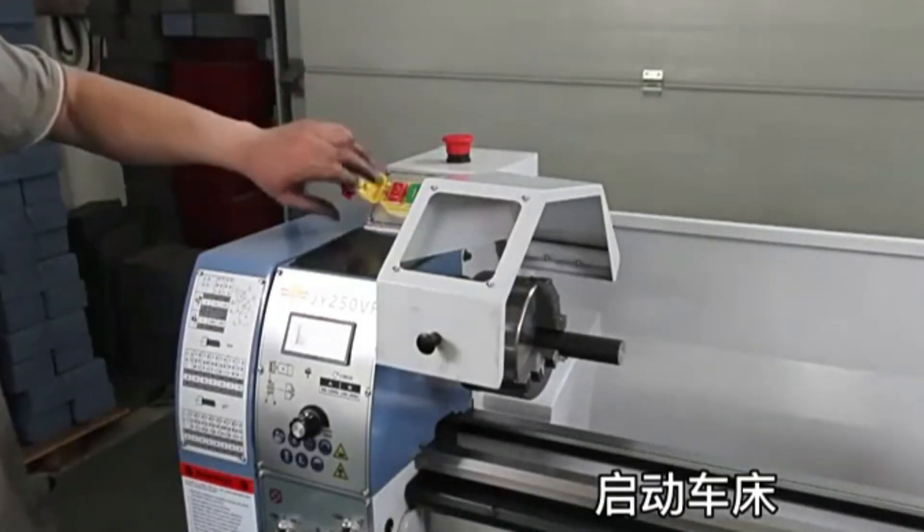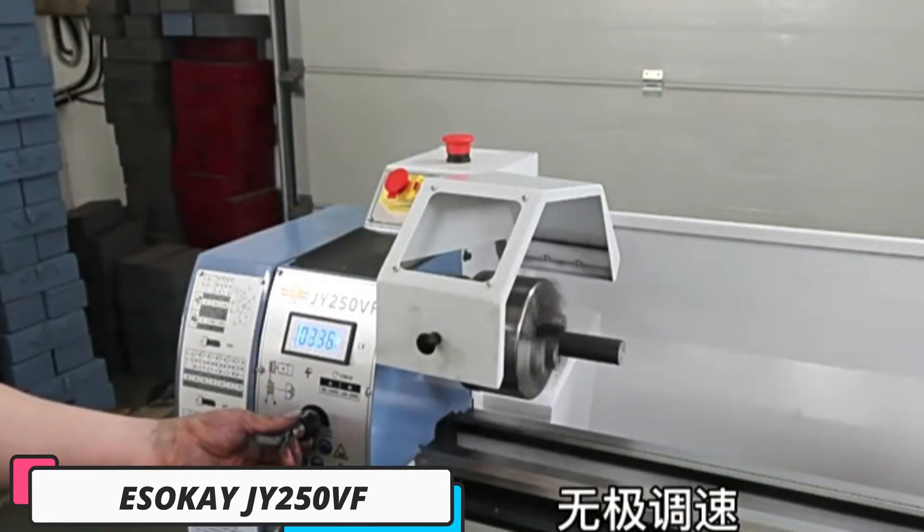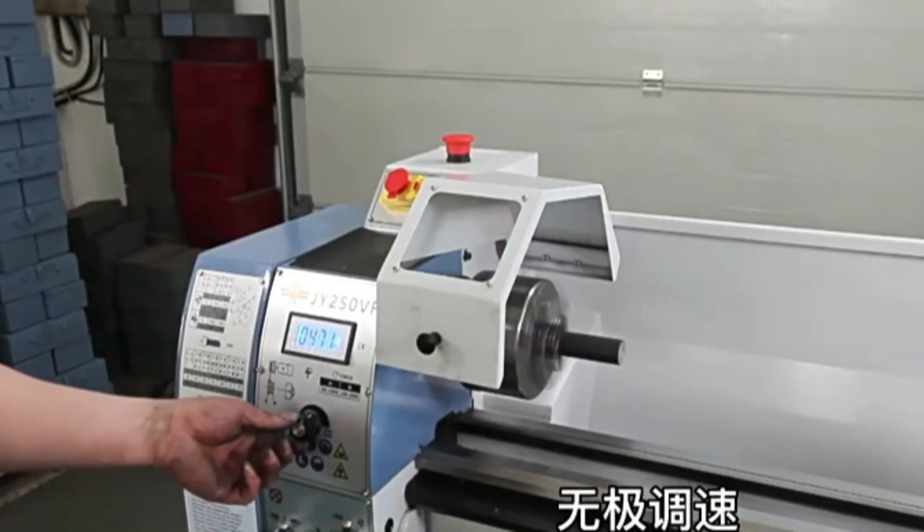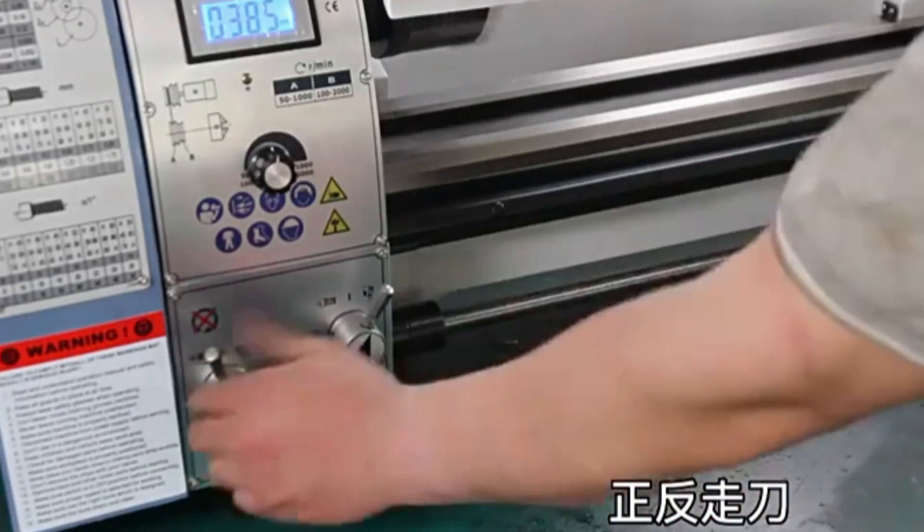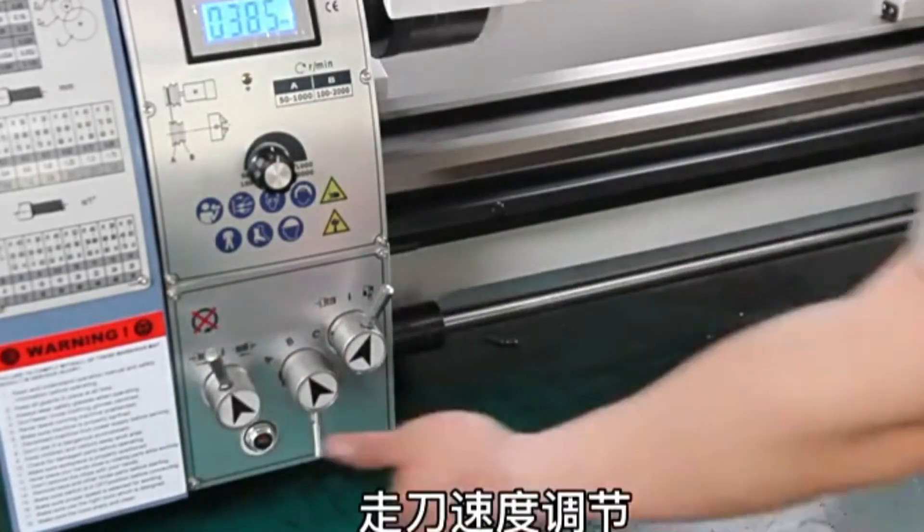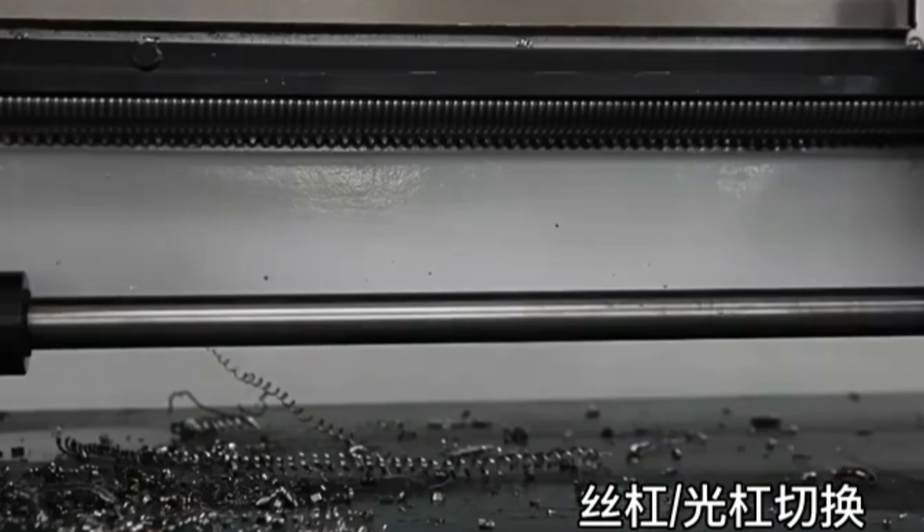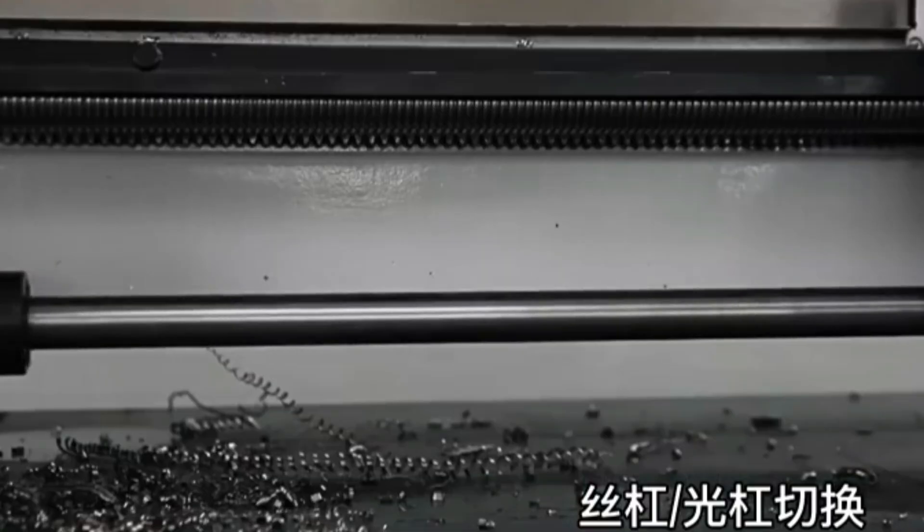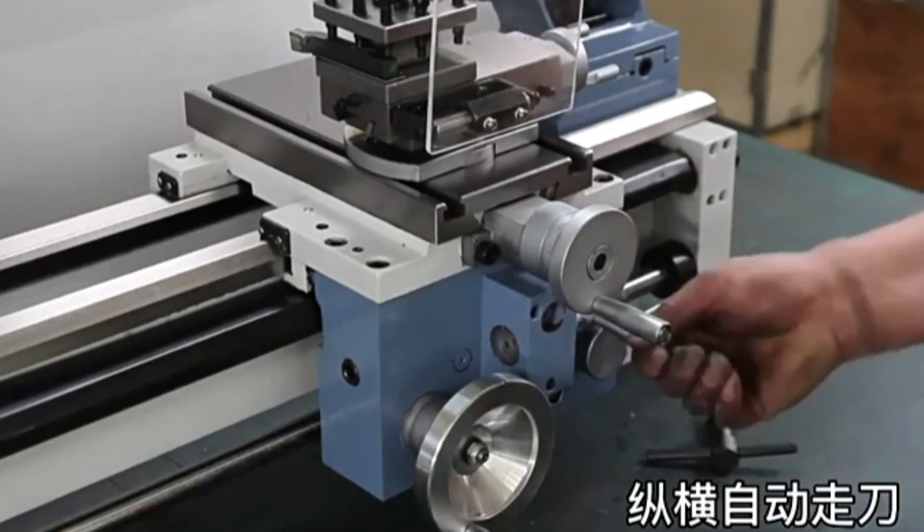Number 1. Yesikei JY250VF, the Yesikei JY250VF is a reliable and efficient mini metal lathe machine designed for small-to-medium-scale metalworking projects. It comes with an EU plug, making it suitable for use in European countries without additional adapters. The compact JY250VF model offers excellent performance with various types of metalwork,